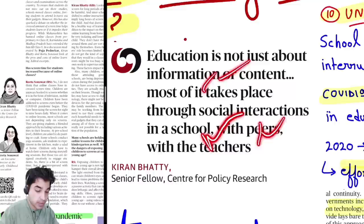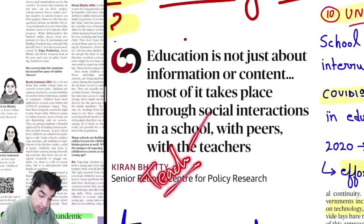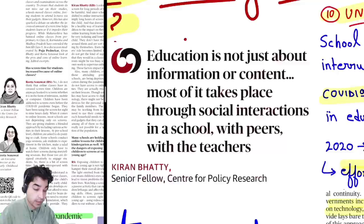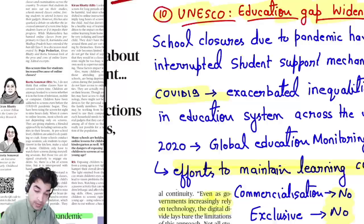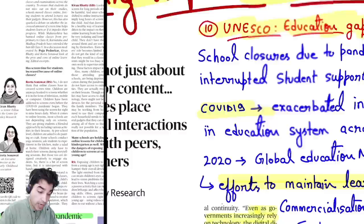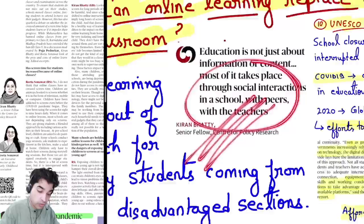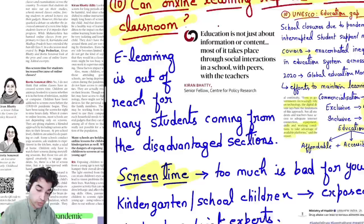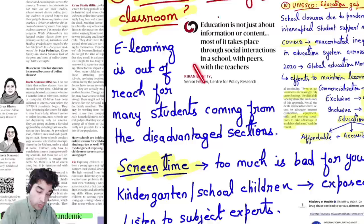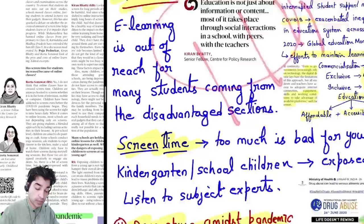Content is not education and information is not education. All this content is present on the internet, but we still need a teacher because a teacher guides us — how to read this, what is important, and how to learn overall. Most of education takes place through social interaction — which happens in school. With many children sitting and doing activities together, peer learning occurs and overall mental, physical, and emotional growth happens — that is irreplaceable. The one-on-one interaction with teachers is also irreplaceable.